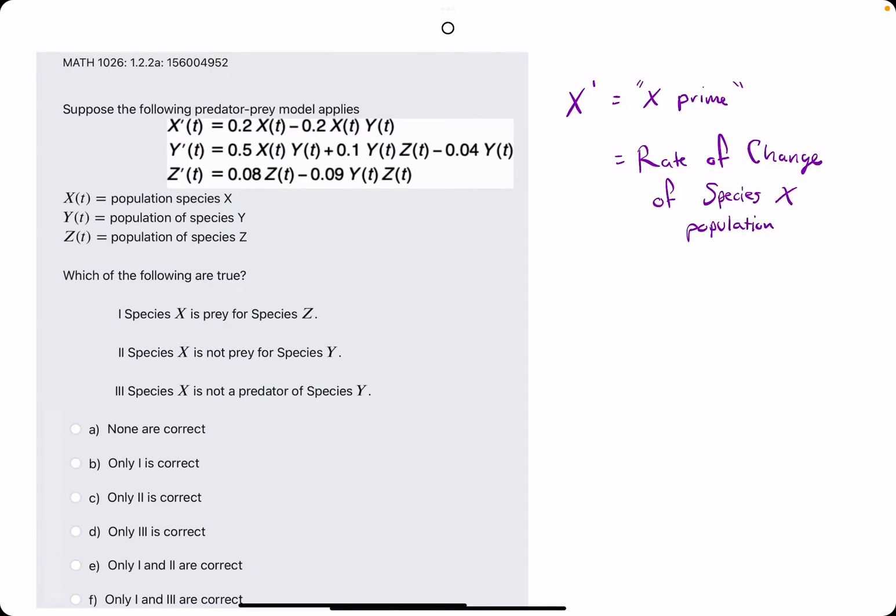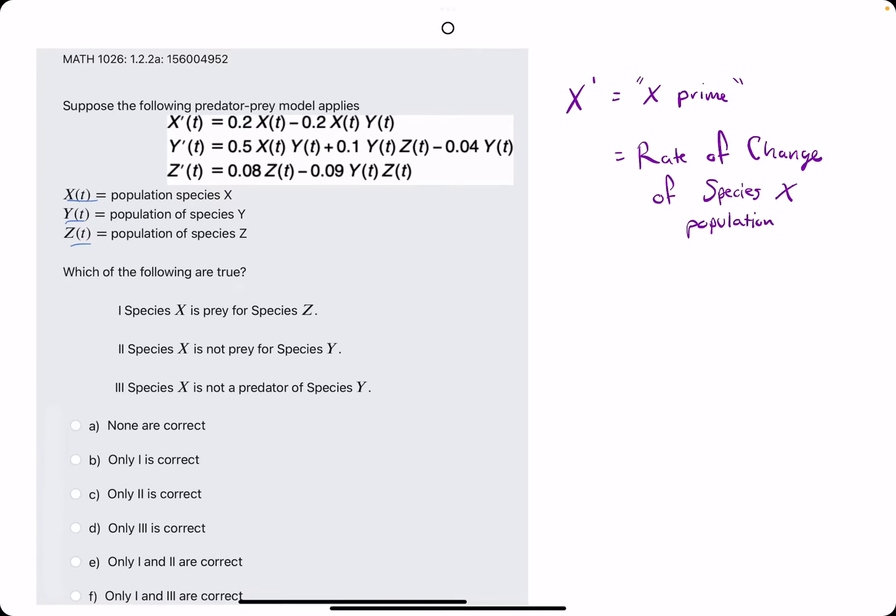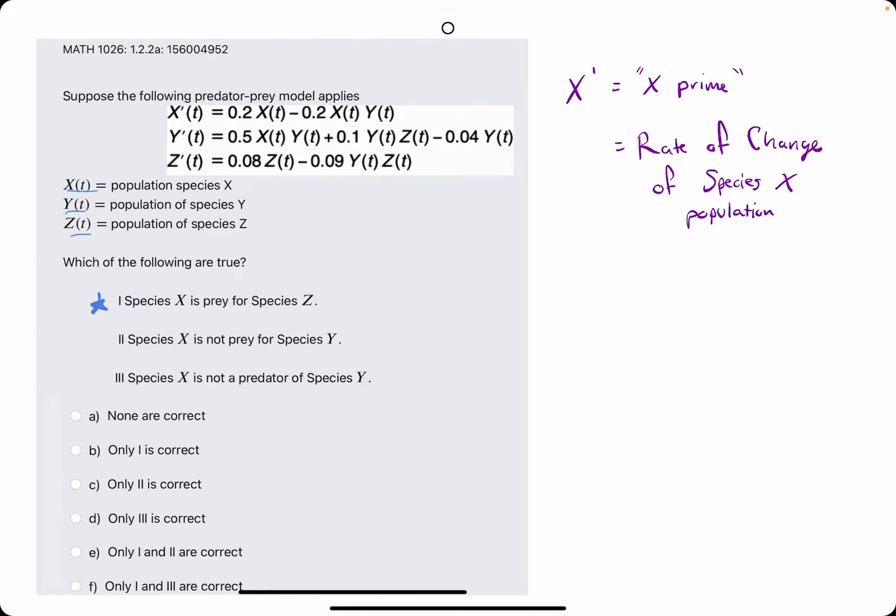Okie dokie. In this problem, they give us a predator-prey model with X, Y, and Z species populations, and the goal is to identify which of these statements are true. Let's jump into it.